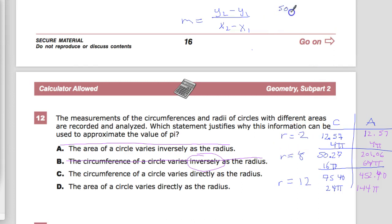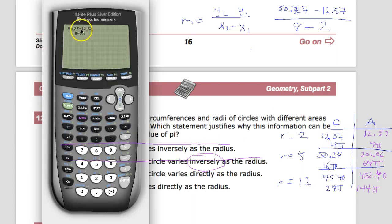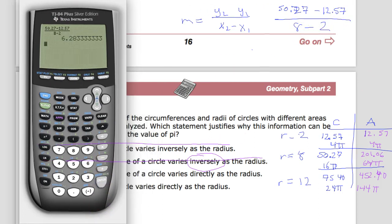So for instance, the first one would be 50.27 minus 12.57, because I want to see how far apart these two numbers are. And then I'll just do 50.27 goes with the 8 of radius, and the other one goes with 2. So I'm going to type that up really fast, and I'll do a similar one for 12, and one for this.